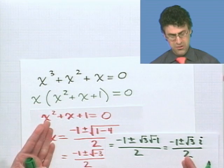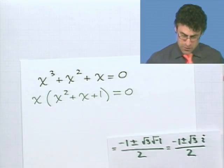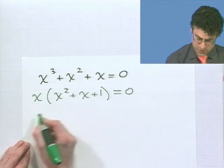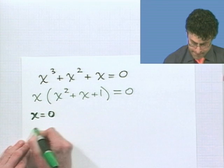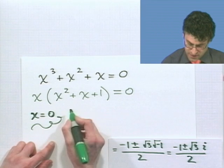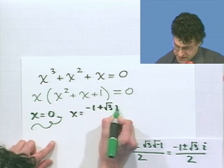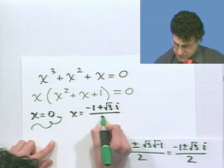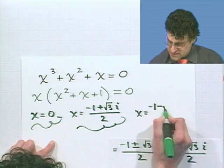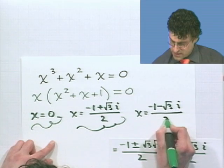So, again, we see three solutions. The solution x equals 0 and these solutions. So, if we summarize everything together, what we see is that we have three solutions to this. Either x equals 0 or this equals 0. And in that case, we actually found the solutions. We saw x will equal negative 1 plus square root of 3 times the imaginary number i all over 2. Or x equals negative 1 minus square root of 3 times the imaginary number i divided by 2.